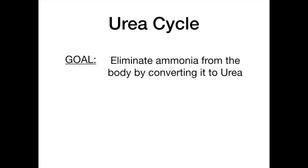Today we're going to start by going through the pathway of the urea cycle. We'll then talk about rate-limiting enzymes and what happens when you have certain enzymatic deficiencies along the pathway. We'll touch on the importance of getting ammonia out of the body, what happens when there's too much ammonia, and how we can treat it. Let's start with an overview.